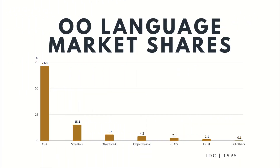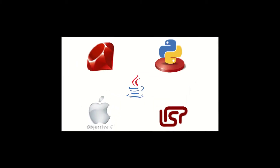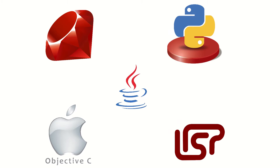According to a 1995 IDC report, object-oriented language market shares were: 1. C++, 71.3%; 2. Smalltalk, 15.1%; 3. Objective-C, 5.7%; 4. Object Pascal, 4.2%. The rise of Java from Sun Microsystems in the late 1990s eclipsed Smalltalk, which then fell out of favor. But Smalltalk remains recognized as the finest object-oriented programming language to this day.